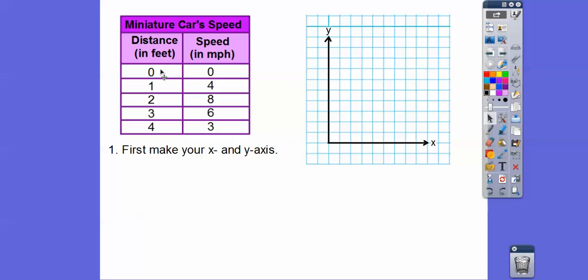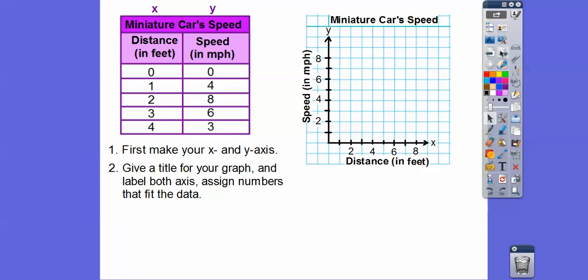Zero, zero, one comma four, two comma eight. But before we do that, we always have to label everything. Let's give a title for our graph. Here's the title for our graph. It's usually right here, somewhere around the table or inside the table. Miniature car's speed. And then this is our speed right here. That's the right column right here, our speed in miles per hour. And then down here, this is our distance. That's from this x column, our distance in feet.